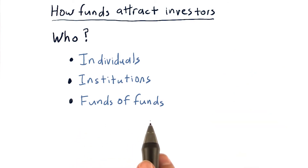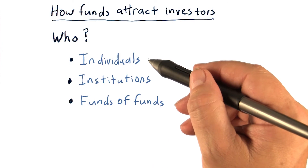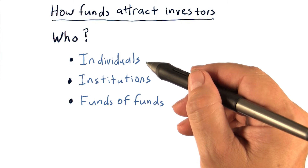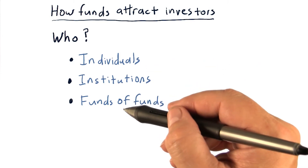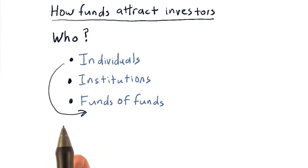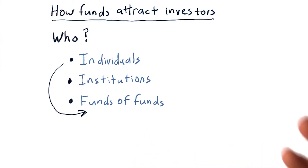And finally, funds of funds. What funds of funds do is they group together the funds of many individuals or institutions. So, for instance, you might be an individual that could invest in one hedge fund, but you'd really like to get the advantage of investing in several funds. So you might allow your money to be collected by a manager of funds of funds, and then that manager would gather together all these assets and pick carefully several hedge funds to invest that money in.